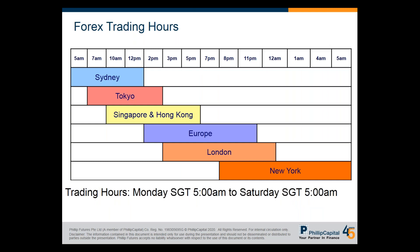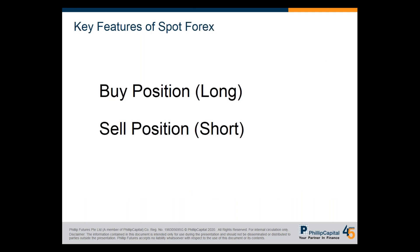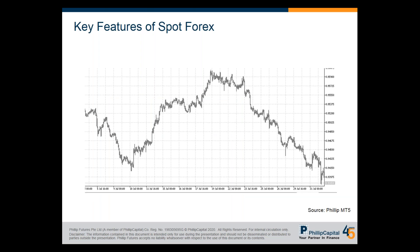Forex is traded 24 hours, five days a week. It starts at 5:00 a.m. Monday morning Singapore time and closes at Saturday 5:00 a.m. It starts with Sydney and Tokyo, followed by Singapore, and ends with New York. If you're holding a buy position, it means you have a long position; a sell position is called a short position. An advantage of forex is you can take advantage of both uptrend and downtrend market movements because you can hold a short or a buy position — meaning you can sell a particular currency pair first and buy it back later.